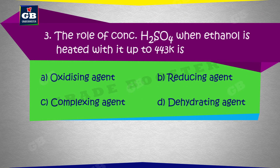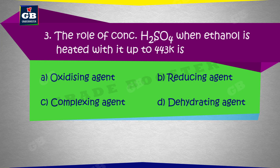The role of concentrated H2SO4 when ethanol is heated with it up to 443 Kelvin. Concentrated H2SO4 ko ethanol ke saath 443 Kelvin tak kaam kiya jata hai — is mein concentrated H2SO4 ka role kya hai? a) Oxidizing agent, b) Reducing agent, c) Complexing agent, d) Dehydrating agent.